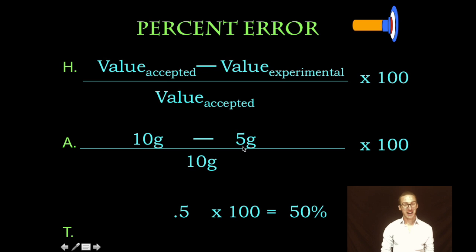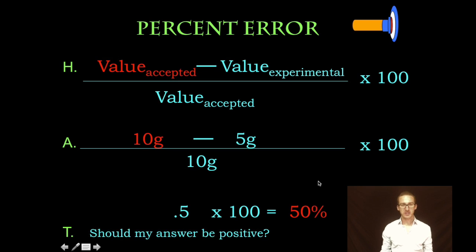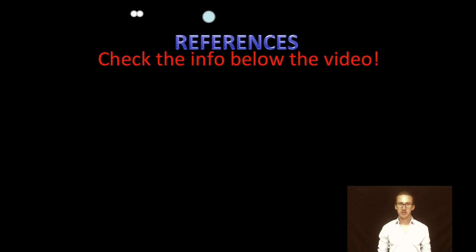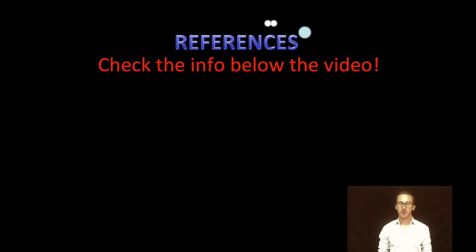Gives us a percent error of 50%. We are 50% off. It's okay if you miss the mark in science sometimes. All we want to do is just report, you know, how far off are we from where we should be. Always take your time. Ask yourself, should my answer be positive? Yes, the accepted value is larger. All right, and that's it for this video. Always take a quick moment to check out the info beneath the video. Check out any references.